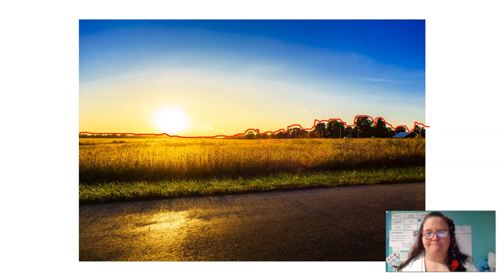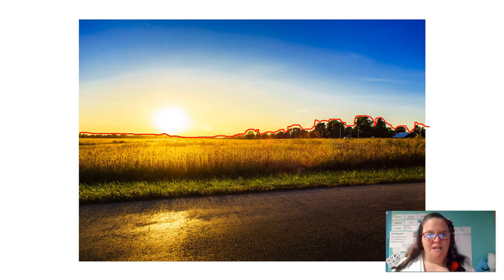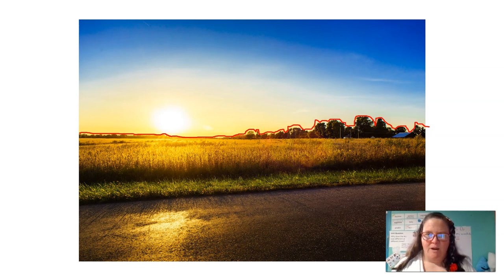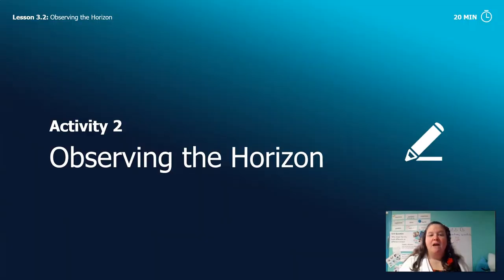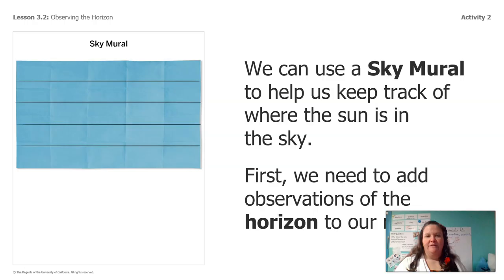I hear some people saying that it looks like the sun is almost touching the ground over here on this flat part and that it's not over here where the trees are. So you see how we can use the horizon to help us describe where the sun is. Now that we've had a little practice using the horizon to talk about where the sun is, let's do some more observing of the horizon.